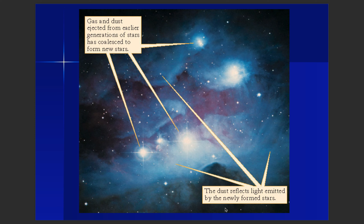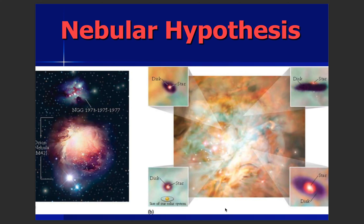Solar systems start out in molecular cloud regions, or nebular cloud regions — this is the area of star formation. This nebular theory is the idea that our solar system and other solar systems are formed in nebular gas regions, something like the Orion Nebula. These nebular regions are regions of star formation and thus also regions of solar system formation.